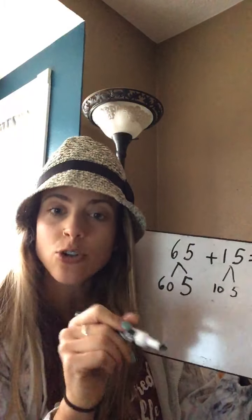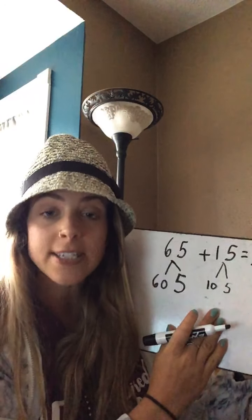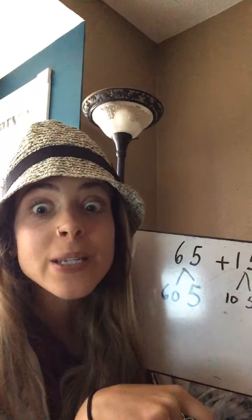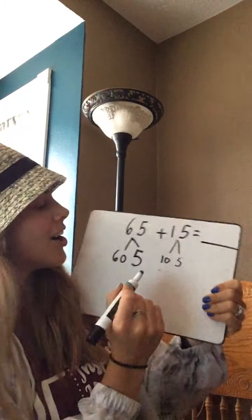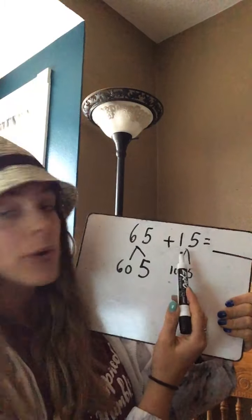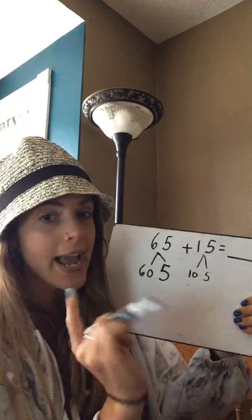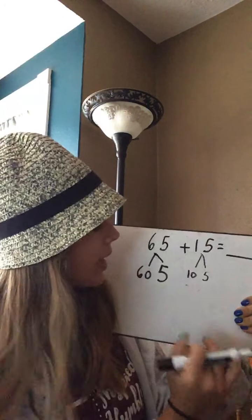I know in class some of you like to write down in your math notebook as I'm solving, so you can definitely do that, or you can just watch and learn — but make sure you're paying attention. So we broke down 65 into 60 and five, and we broke down 15 into 10 and five. So now we can just add up our tens and our ones.